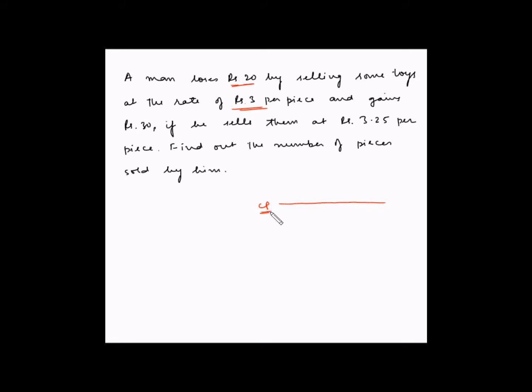So suppose this is the cost price of the entire deal. When he is selling toys at the rate of Rs 3 per piece overall he is making some money which is giving him a loss of Rs 20 and this is at the rate of 3 per piece.